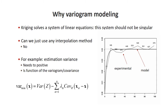So why do we do variogram modeling? Why not just say I have some observations, I have to calculate an experimental variogram in one dimension, and I have a number of semi-variances calculated — why can't I just interpolate these linearly or piecewise linear? The answer lies in the fact that kriging solves a linear system of equations, and that system depends on the variogram values we calculate. This system has to remain positive definite and should not be singular.